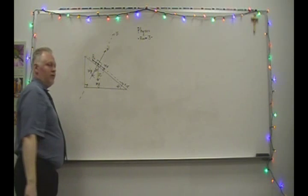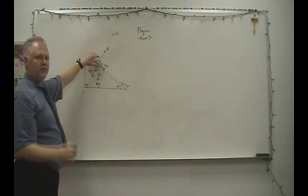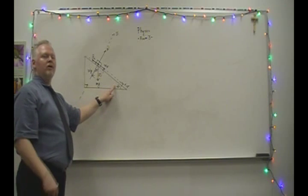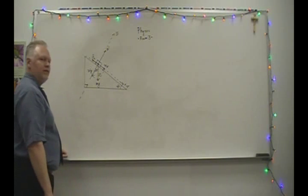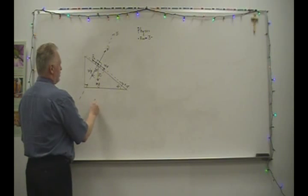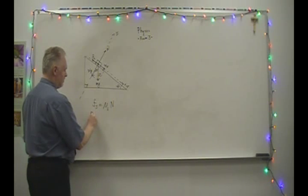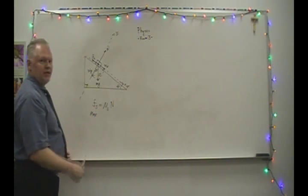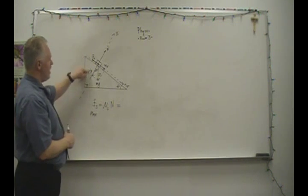The static friction Fs is holding the block in place. Let's say we increase the angle until we just see it begin to move — that's the case I'm interested in. We'll call that angle the angle of friction, or striction. The friction force equals mu_s times N at its maximum — that's the force you have to break through to get it to slide. And the normal force in this case will not equal the full weight; it equals the y-component of the weight.